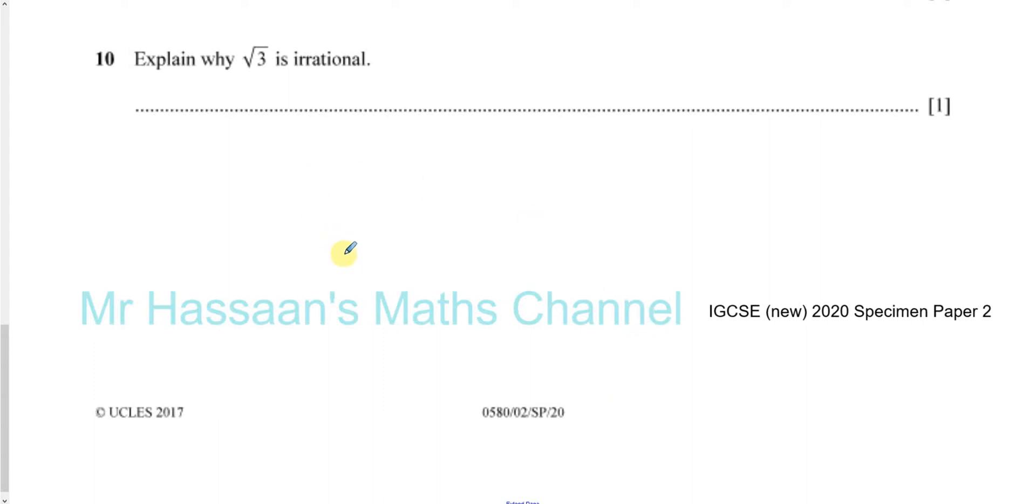Okay, now for question number 10 from the specimen paper 2 of the 2020 syllabus. Explain why root 3 is irrational.